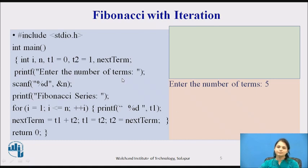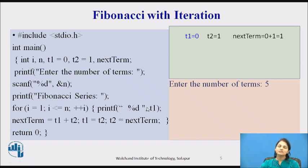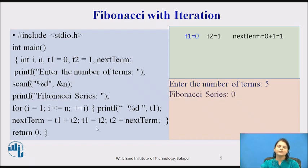Now we will see the Fibonacci sequence with iteration first. We have i equal to 1 up to n terms, then we print the first term. T1 is initialized to 0 and T2 to 1, so the first term printed is T1, which is 0. Then the next term is equal to T1 plus T2, so 0 plus 1 gives next term equal to 1.